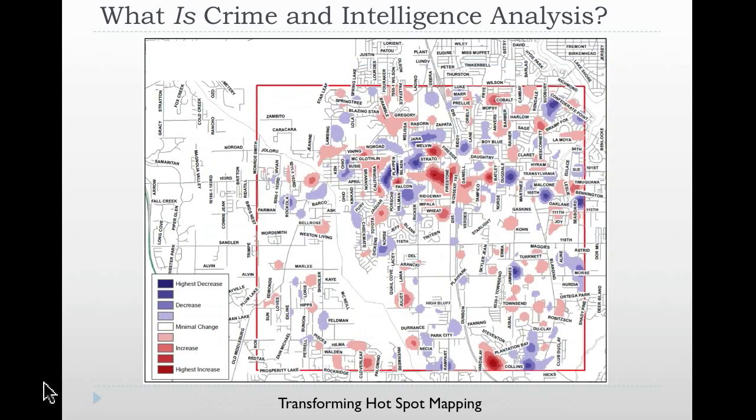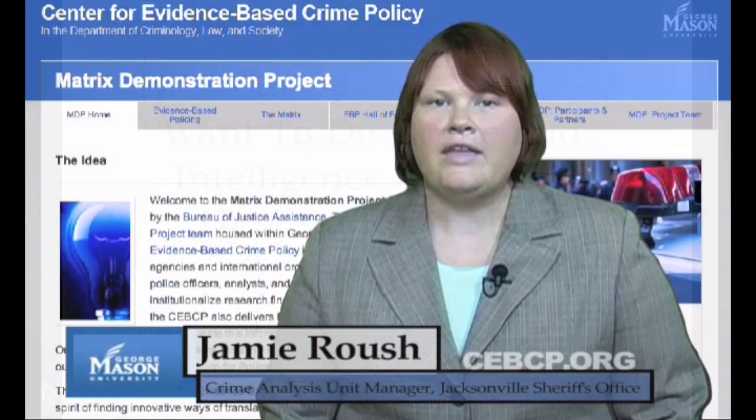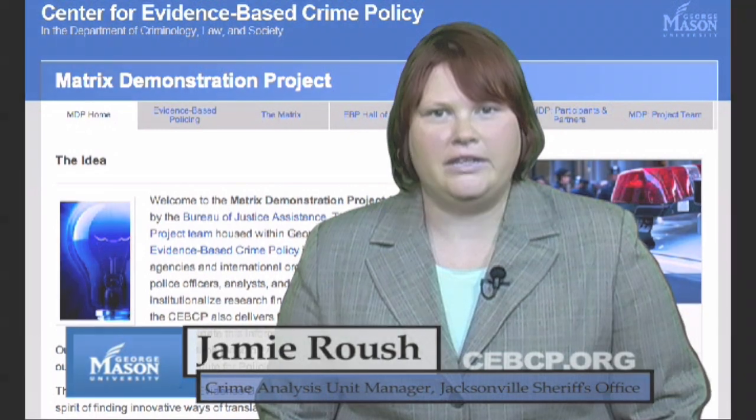And then transforming hotspot mapping — actually showing areas that are an increase and decrease. This particular map shows that areas in red are areas that are initiating, expanding, new areas; and the blue areas are really decrease areas over time. That concludes Chapter 2. Welcome to Chapter 3.